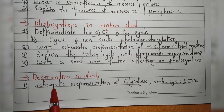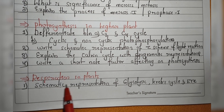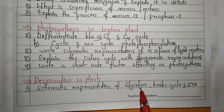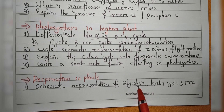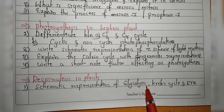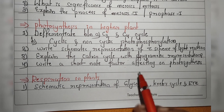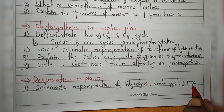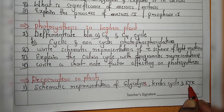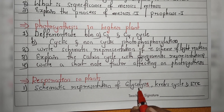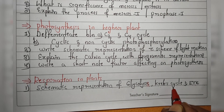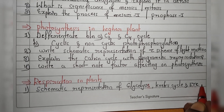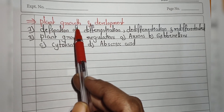Next chapter is Respiration in Plants. From respiration in plants, they will ask any one question from three topics: the schematic representation of glycolysis, the Krebs cycle, and the electron transport chain. You just need to know how to write the glycolysis pathway, Krebs cycle, and ETC.